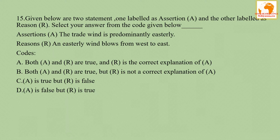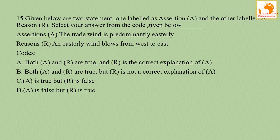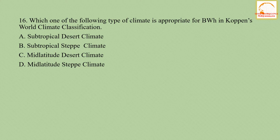Question number fifteen: given below are two statements. Assertion: the trade wind is predominantly easterly. Reason: an easterly wind blows from west to east. The assertion is correct, but the reason is wrong, because an easterly wind blows from east to west — that is why it is called an easterly wind. The correct answer is option C — A is true but R is false.